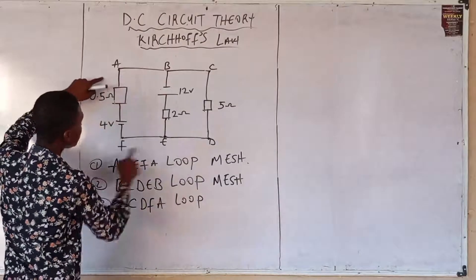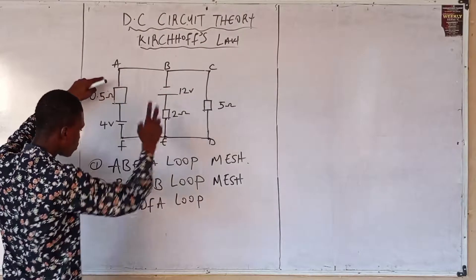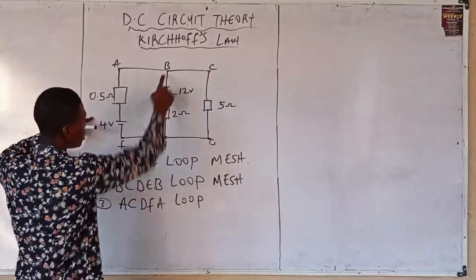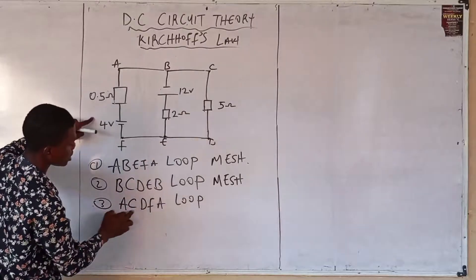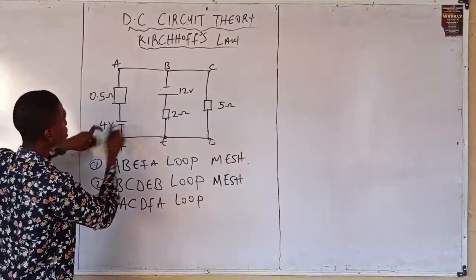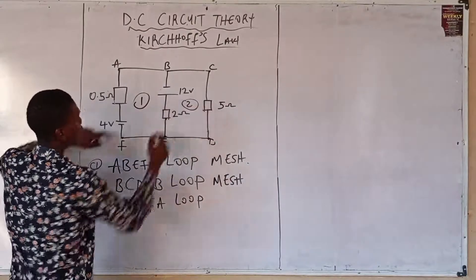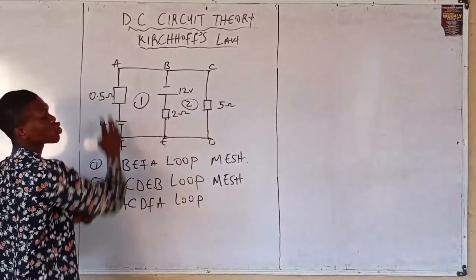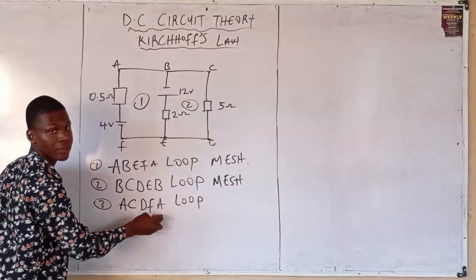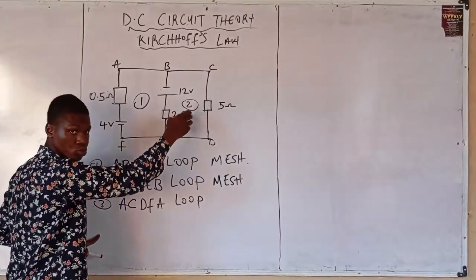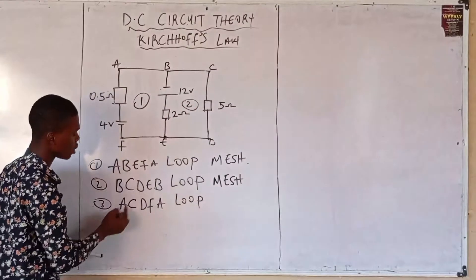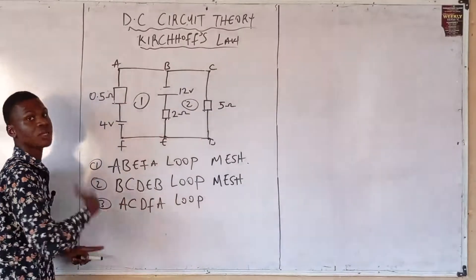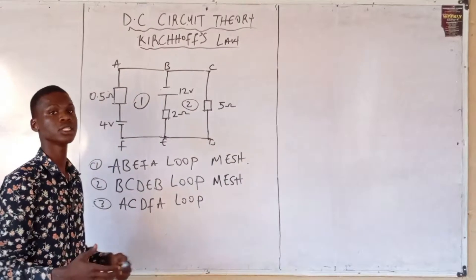ABEFA is found in ACDFEA. BCDEB is found in ACDFEA, meaning loop one and circuit two—loop one is a subset to ACDFEA. Similarly, loop two is a subset to ACDFEA, so one and two are meshes. That's how it works.